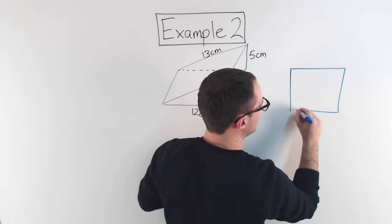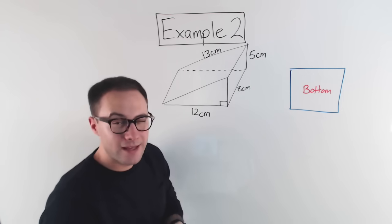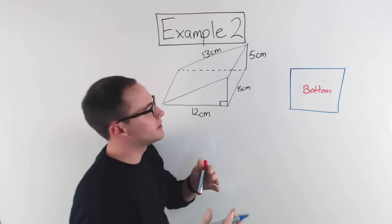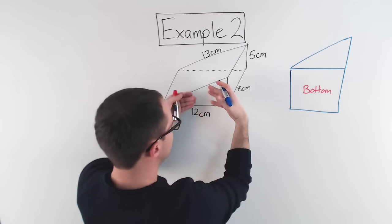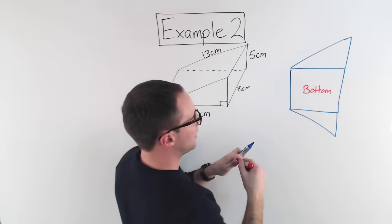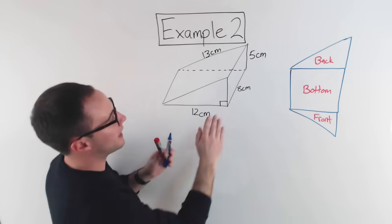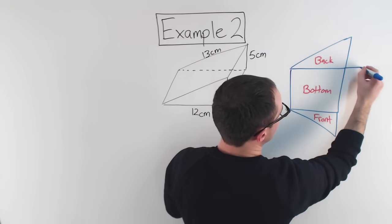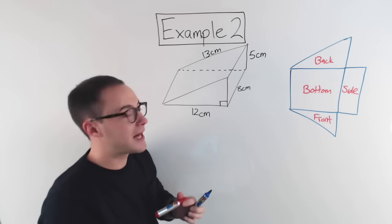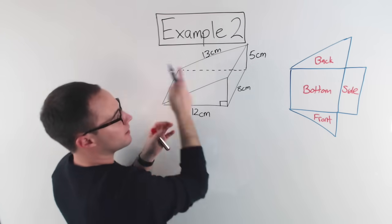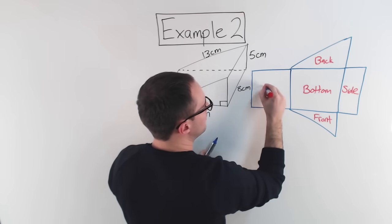We've got a bottom rectangle there — that's the bottom. It helps a lot to label, since it can get very confusing. This face folds out to look something like that — that's going to be the back. This one folds forward — that's going to be the front. Then we have this side here, and again the one a lot of people forget: the top. I'll fold it the other way — that's going to be the top.